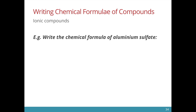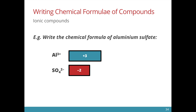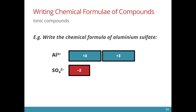Here is the formula for aluminium sulfate. Aluminium forms the Al3+ ion while sulfate is SO4 2-. Again, we find the lowest common factor and try to balance out the charges by adding the appropriate number of ions.